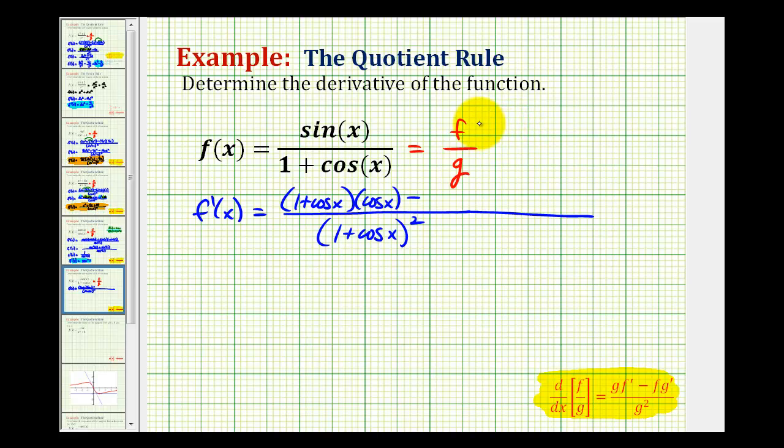minus f times g prime, or the numerator, times the derivative of the denominator. Well the derivative of one is zero, derivative of cosine x is negative sine x.